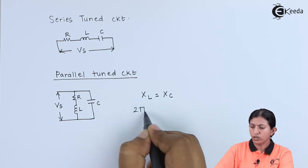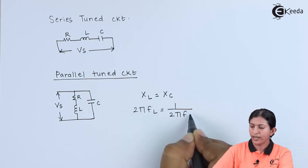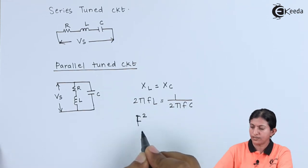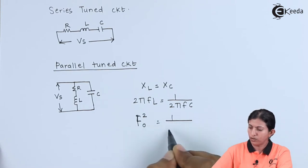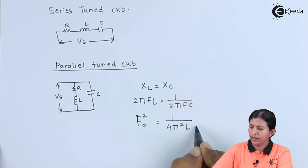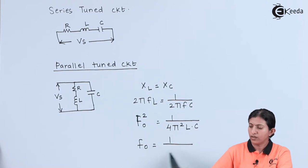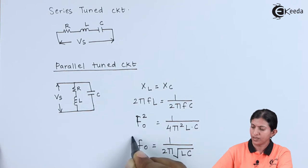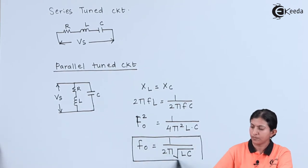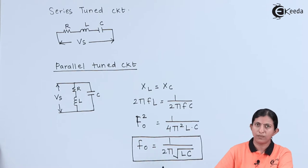XL is equal to 2πFL and XC is equal to 1 upon 2πFC. At resonant frequency F0, we get F0² = 1 / (4π²LC), so the resonant frequency is F0 = 1 / (2π√LC). At this frequency we get maximum amplification, and for all other frequencies we get minimum amplification.